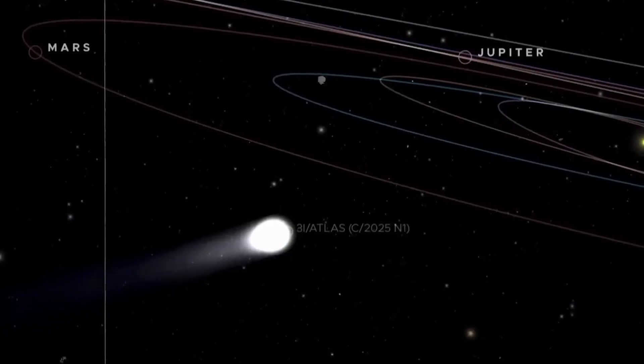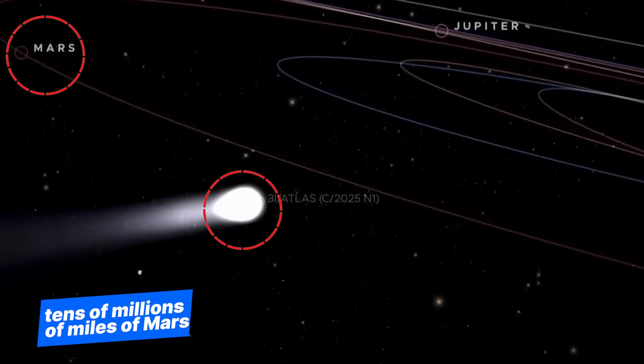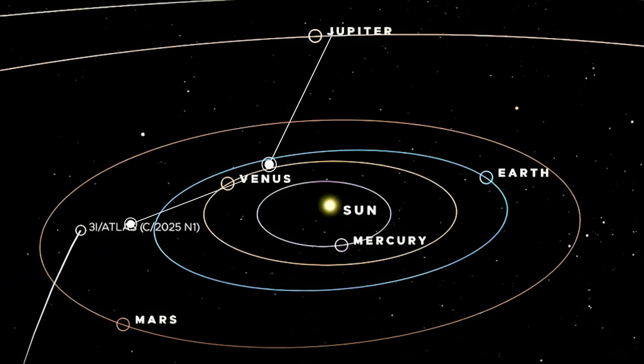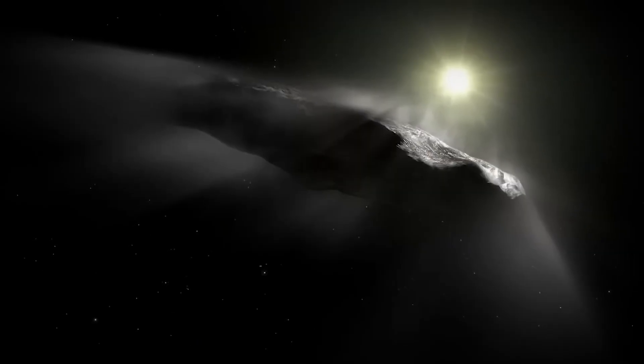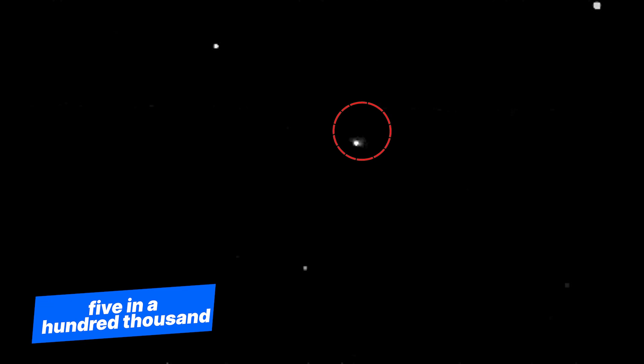But here's where it gets scary. The timing of its arrival was precise enough to bring it within tens of millions of miles of Mars, Venus, and Jupiter, while being completely invisible from Earth when it was nearest to the Sun. Loeb calculated the odds of this happening naturally. It's five in a hundred thousand. That's not a coincidence, that's precision.